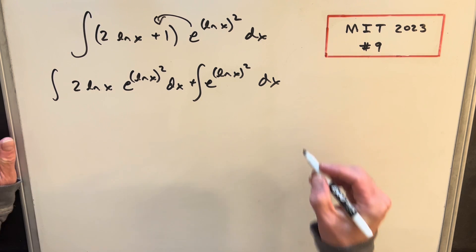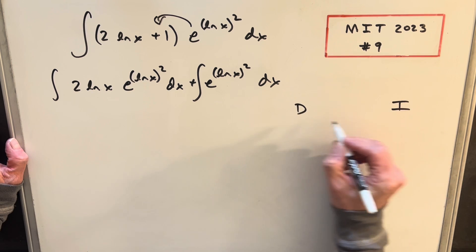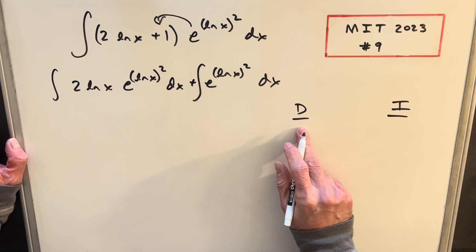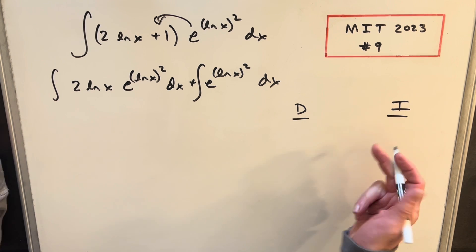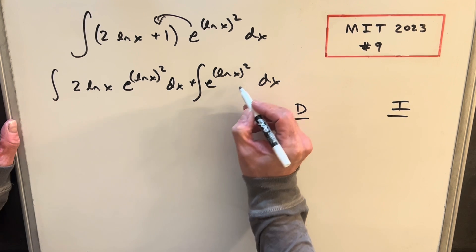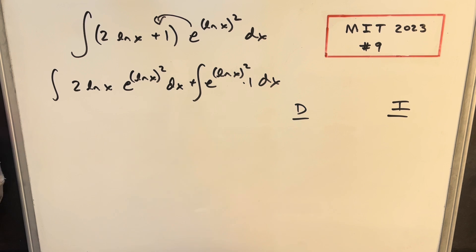We'll use the DI method or tabular integration. So I'm going to set up my table with two columns, one to differentiate, one to integrate. Well, you might think that's strange because we don't have two functions, but we can create a one easily, just multiply them by one.